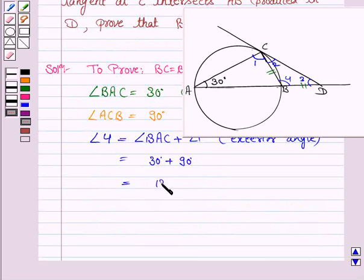So angle 4 is 120 degrees and angle BAC is equal to angle 2 since these are the angles in alternate segments.